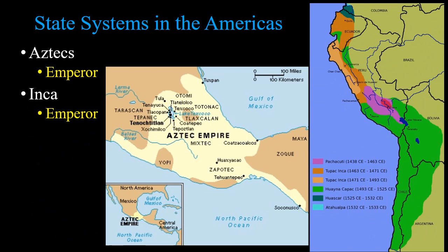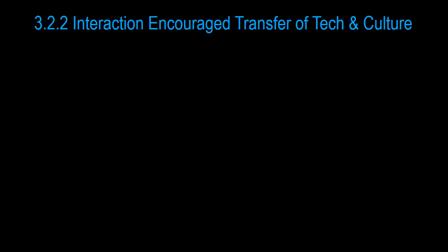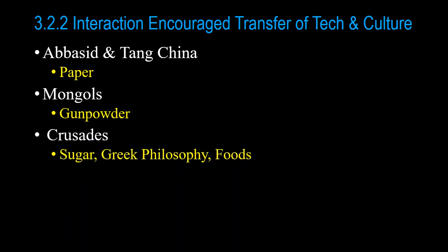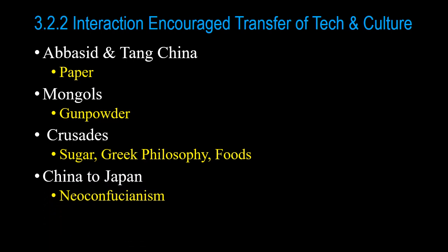In the Americas, there were empires with the Aztecs and the Incas. Let's talk about state support for transfer of technology and culture, whether inadvertent or purposeful. The Abbasids and Tang Dynasty gave us paper through the Battle of the Talas River. The Mongols helped spread Chinese gunpowder. In the Crusades, Europeans went to the Middle East, some settled and some came back, getting exposed to sugar, a rediscovery of Greek philosophy preserved by Byzantines and Muslims, and new foods like citrus. From China to Japan, we get Neo-Confucianism.